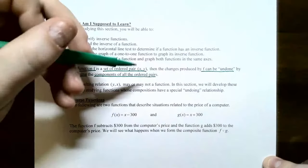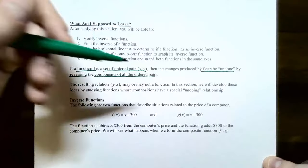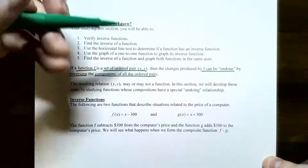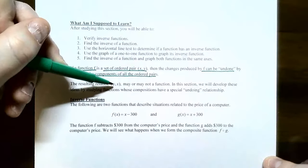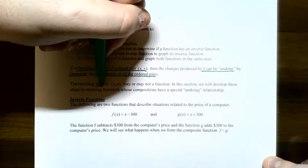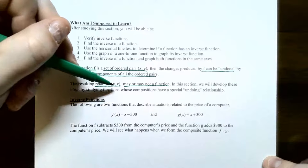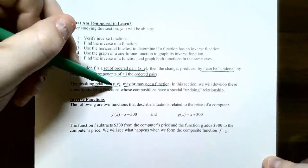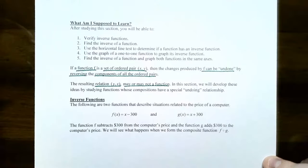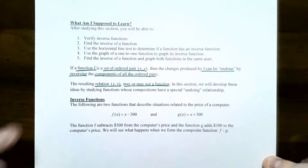If you have an x that you plug into f, you'll get exactly one y value. If you have an inverse function, the inverse will undo what f did — it takes a y value as input and sends it back to x. The resulting relation is a set of ordered pairs with y comma x instead. Keep in mind that reversing may not always yield a function. In this section we'll develop ideas on how to study functions whose compositions have a special undoing relationship.